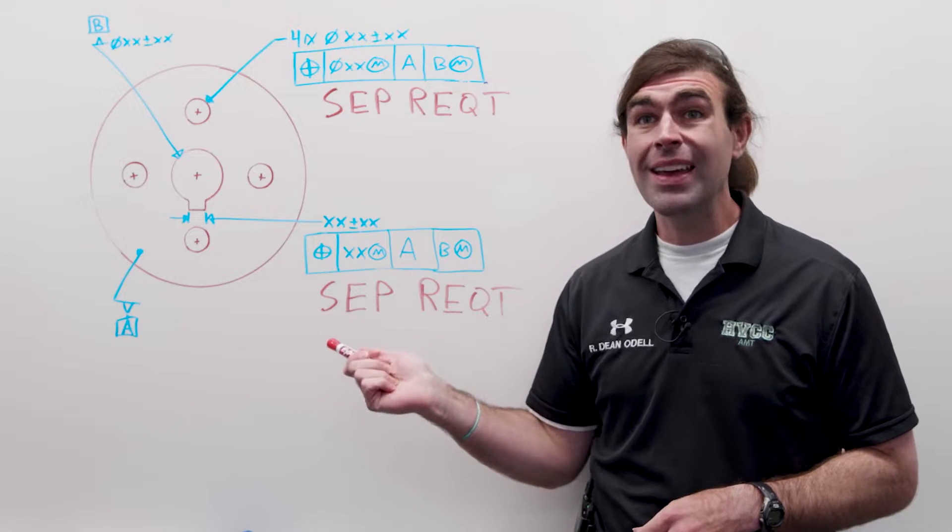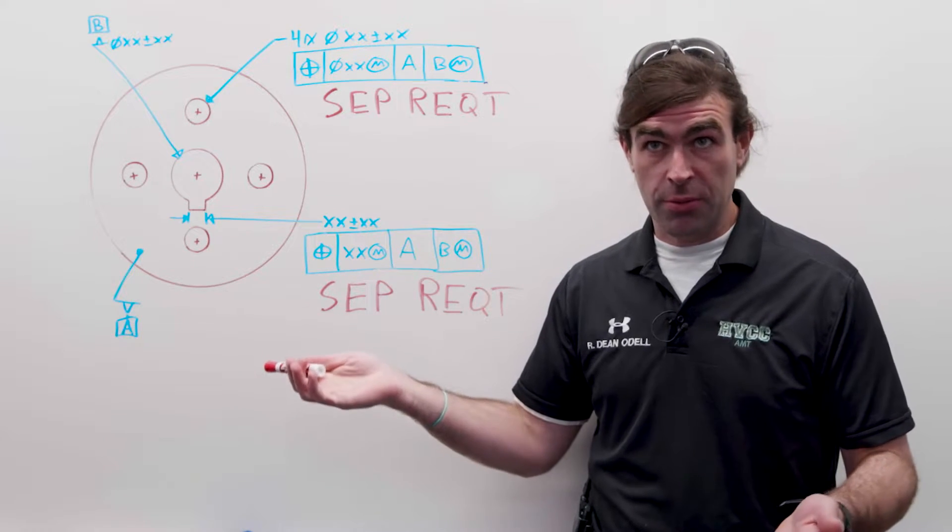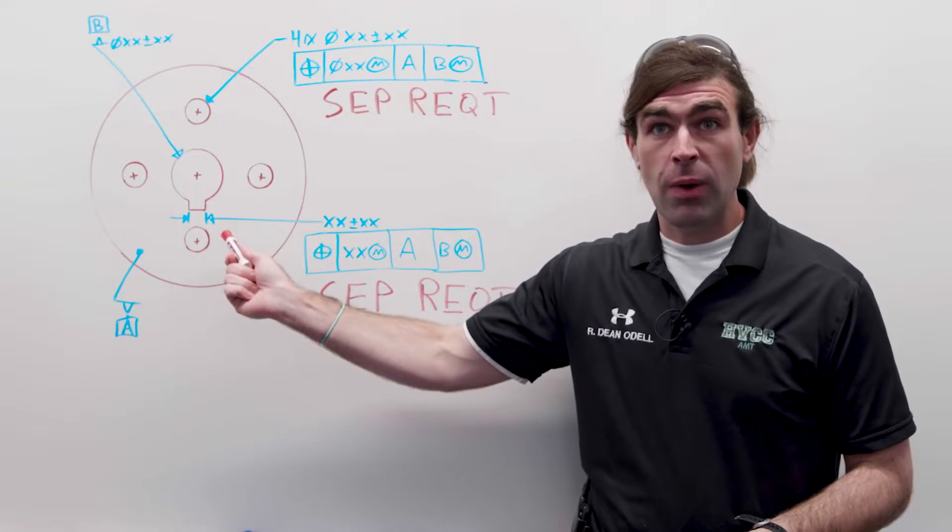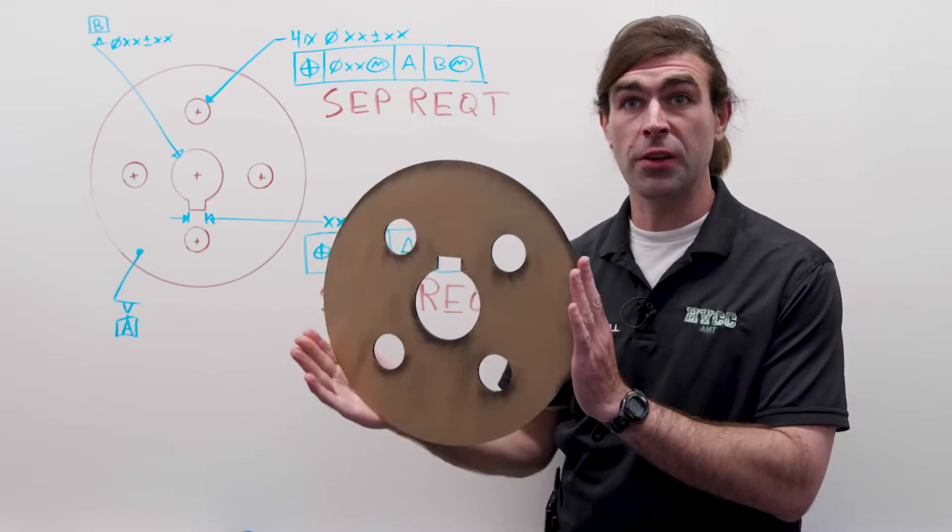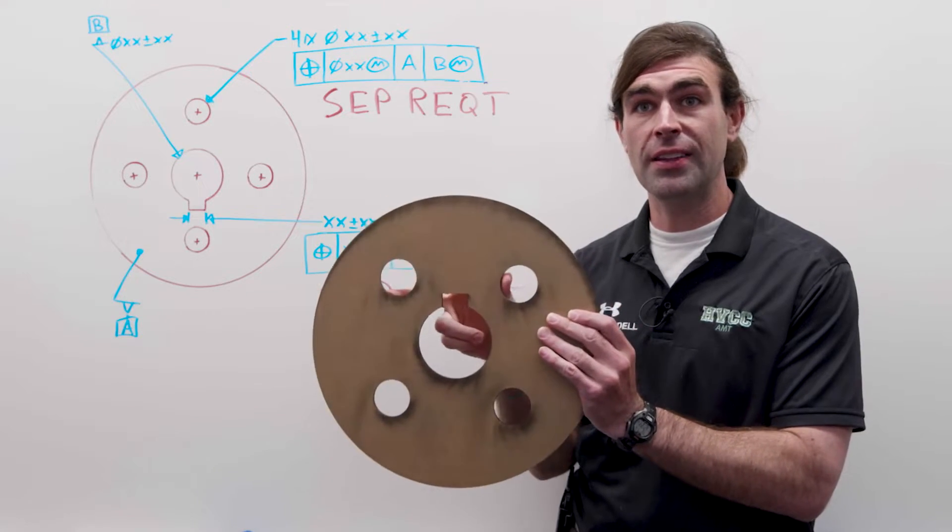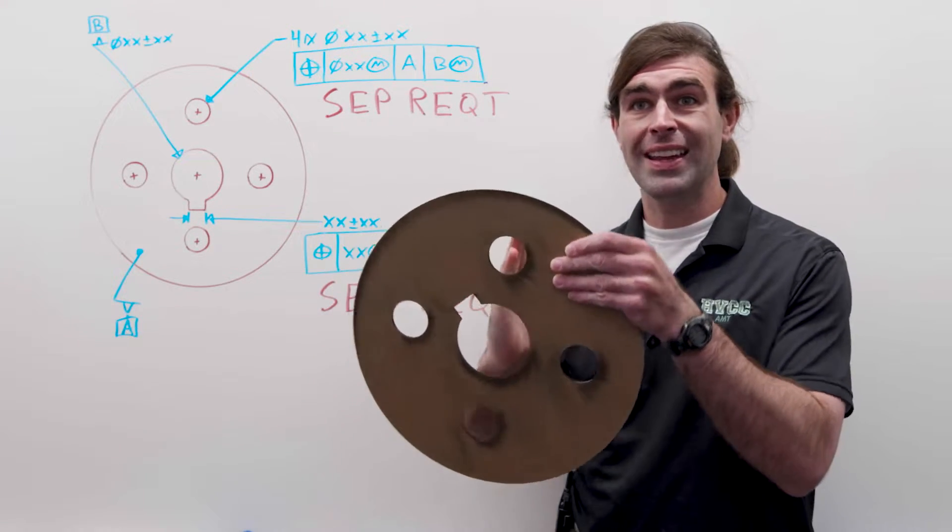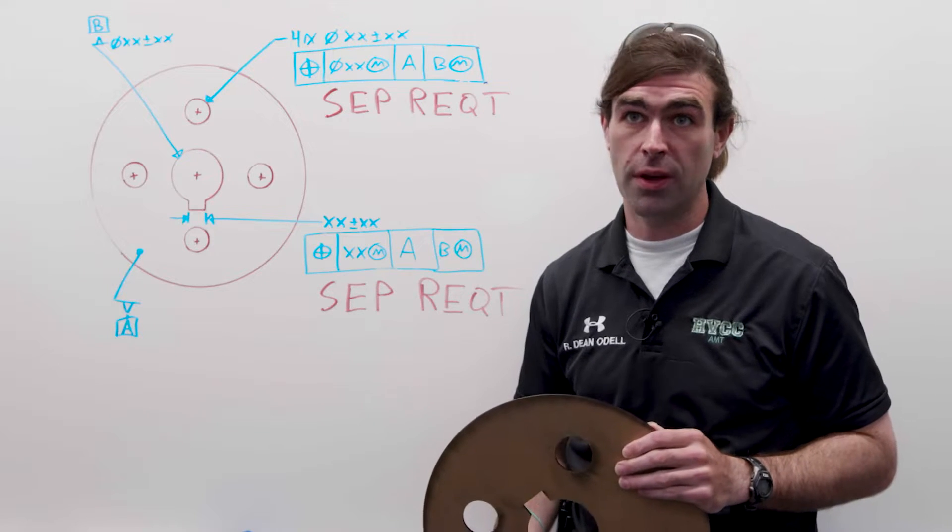Now, what this does is separate the requirement, as you might imagine, of the keyway to the hole. So what you can end up with is a part that looks like this, where the keyway is in between two of the holes, not lined up with two of the holes.